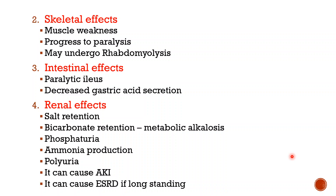Fourth, there is increased ammonia production. Hypokalemia stimulates two biochemical pathways: glutamine transaminase and PEPCK (phosphoenolpyruvate carboxykinase), resulting in increased ammonia formation. Fifth is polyuria, occurring due to ADH resistance at the level of the kidneys. Finally, hypokalemia can cause acute kidney injury and end-stage renal disease if long-standing.